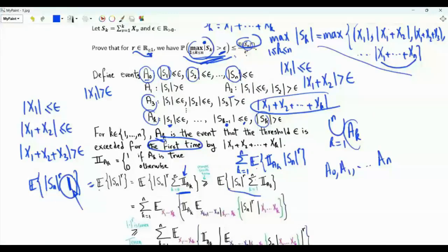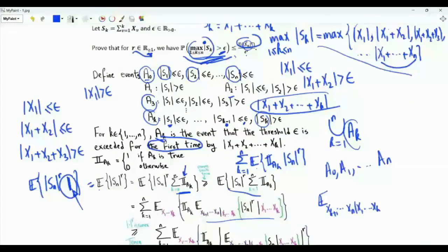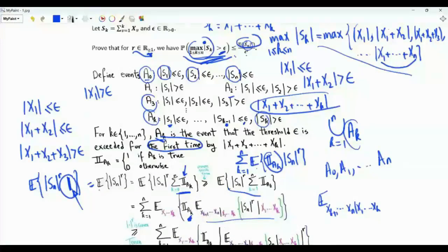The inner expectation is with respect to the random variables X_{k+1}, ..., X_n given X_1, ..., X_k. This is the conditional expectation of |S_n|^r given X_1, ..., X_k. Note that the indicator of A_k is written outside this expectation because event A_k depends only on the random variables X_1, ..., X_k and is independent of X_{k+1}, ..., X_n.